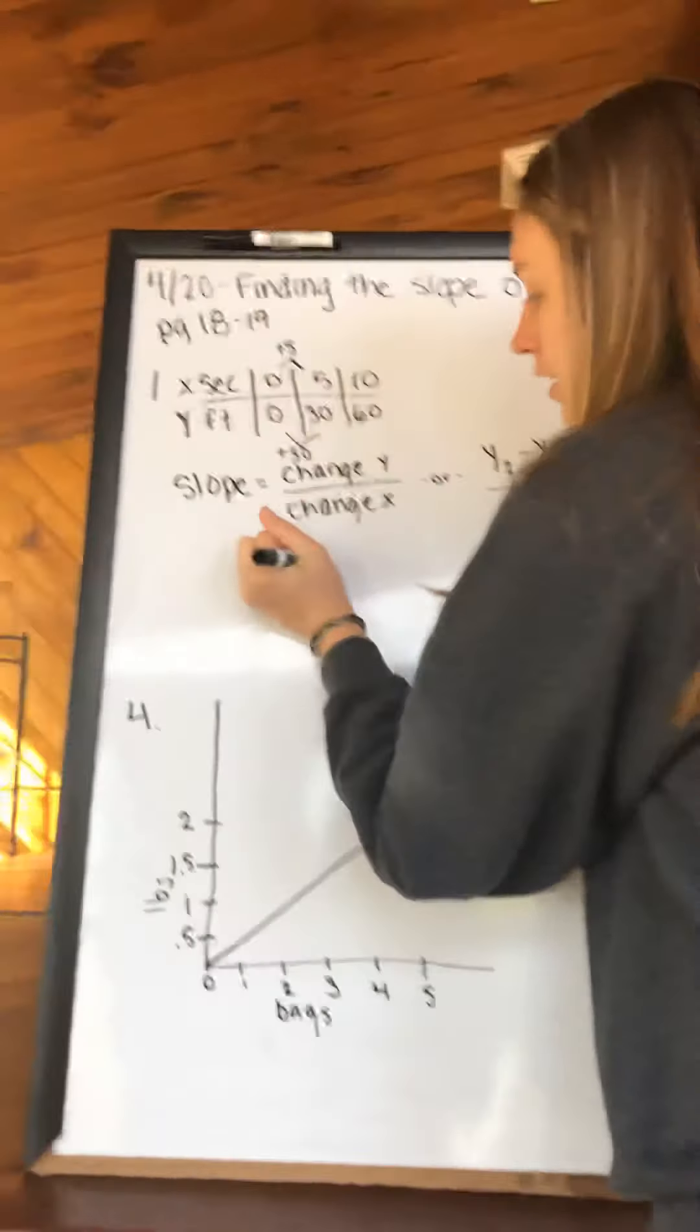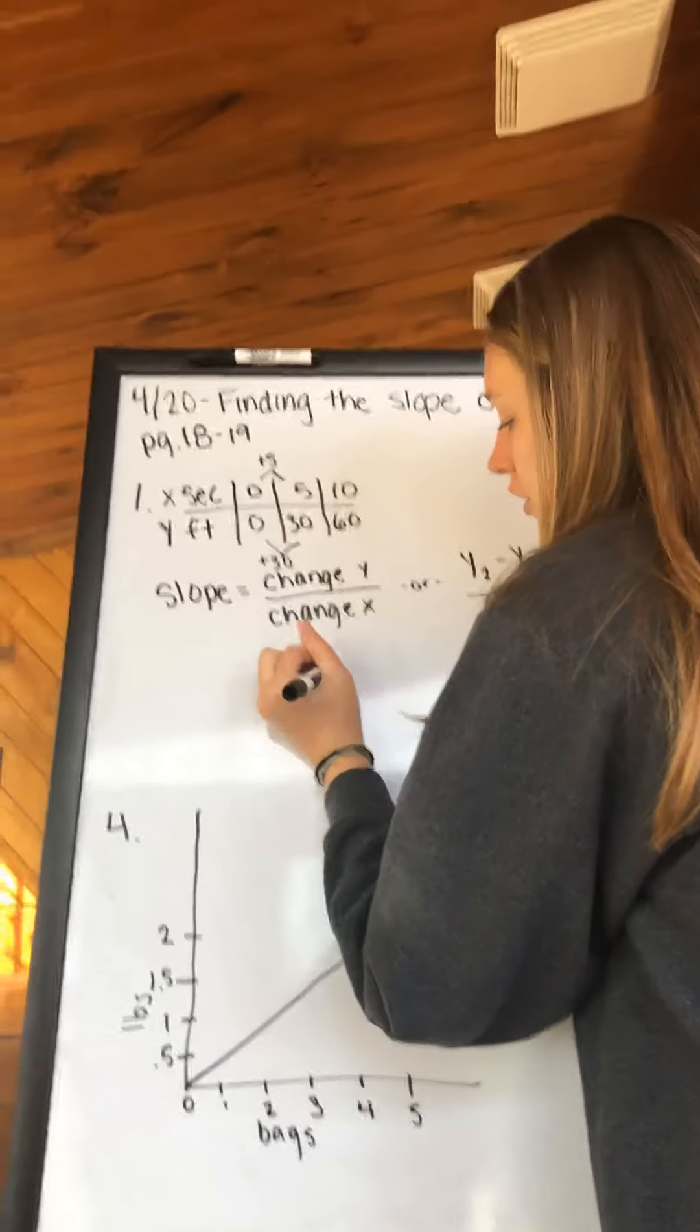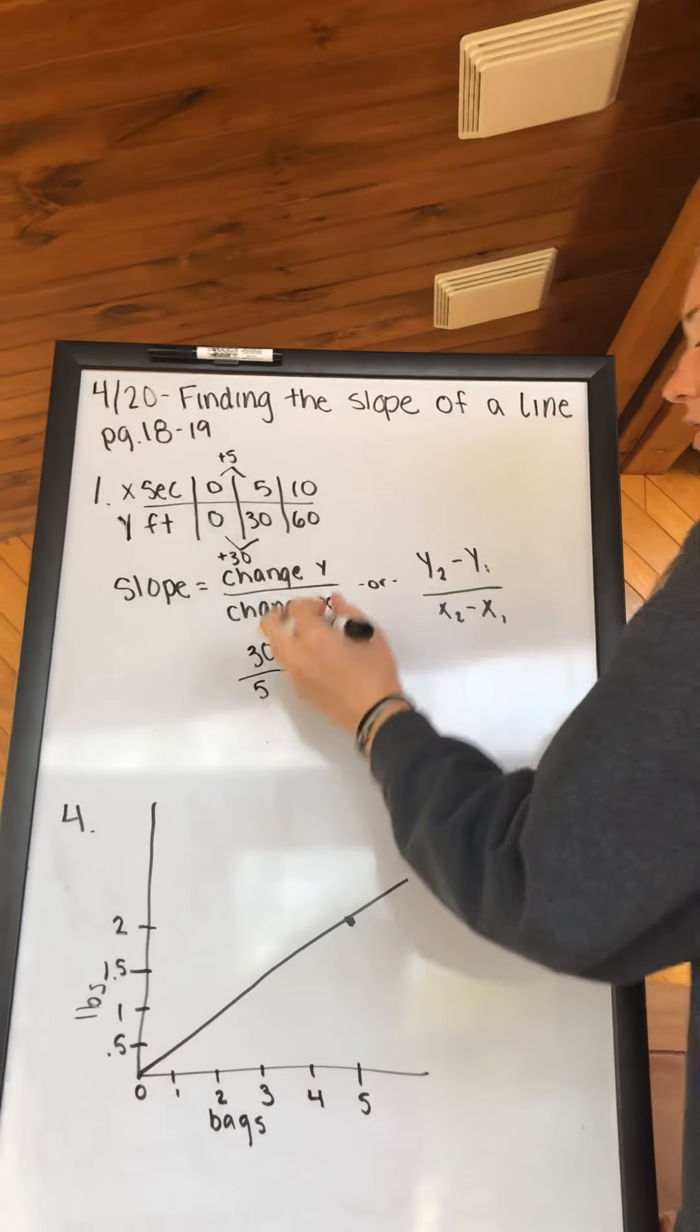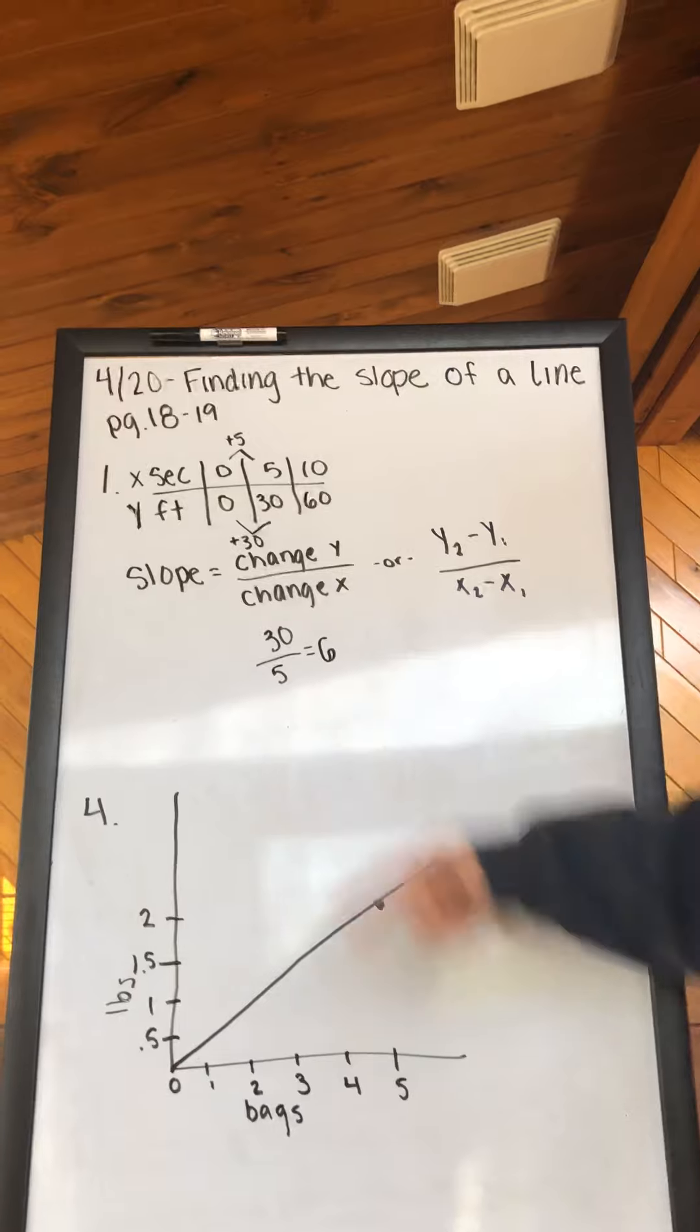Our change in y is 30. Our change in x is 5. 30 over 5 is the same thing as 30 divided by 5, and 30 divided by 5 is 6. So our slope for number 1 is 6.